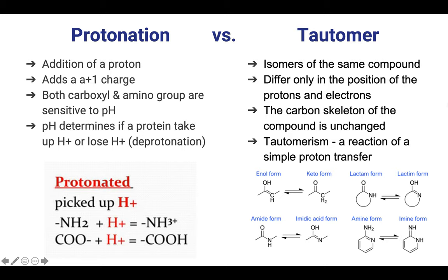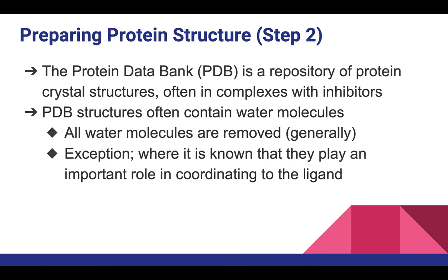Tautomers only differ in the position of protons and electrons, as seen in enol/keto and lactam/lactim forms. The molecular formula remains the same; only the position of the atom and electron differs. The carbon skeleton is unchanged, and tautomerism is essentially a simple proton transfer. You can modify which tautomer to use — either enol or keto form — for your docking.